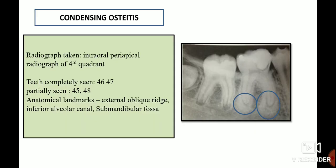Lastly, let's discuss condensing osteitis. The anatomical landmarks present are the inferior alveolar canal, external oblique ridge, and submandibular fossa. The tooth of interest is 46. In the root portion there is uniform widening of the PDL space surrounded by an ill-defined radiopacity. These features are suggestive of condensing osteitis.